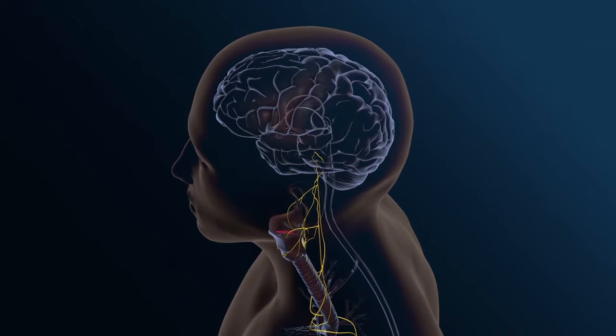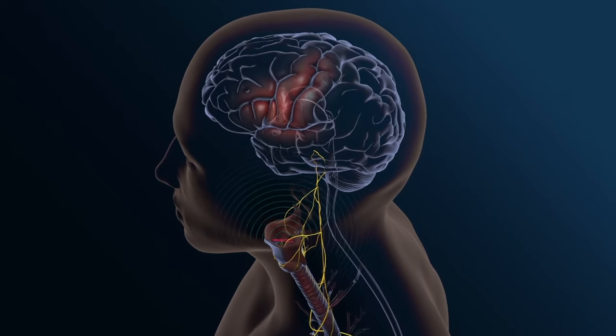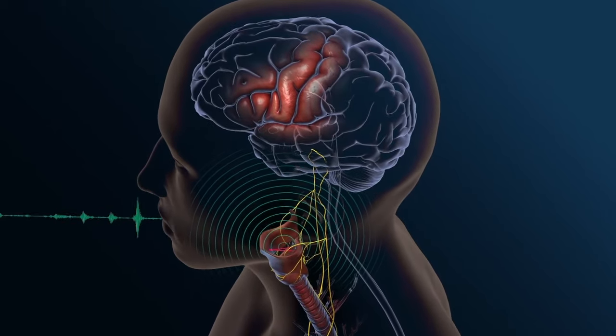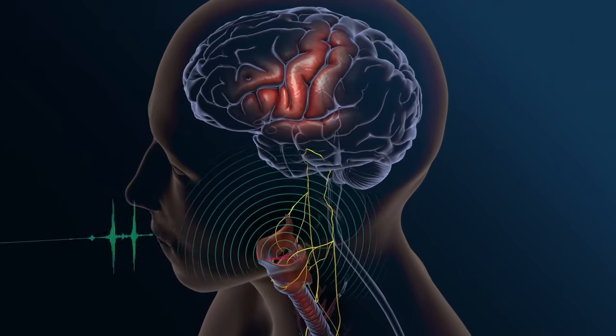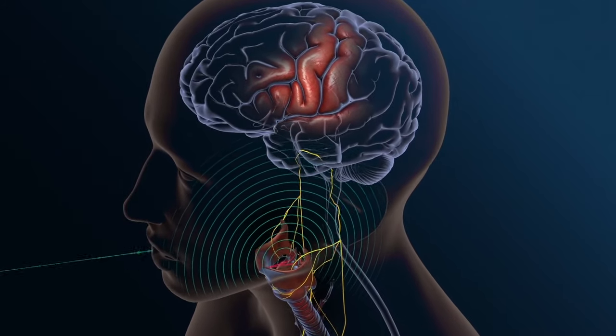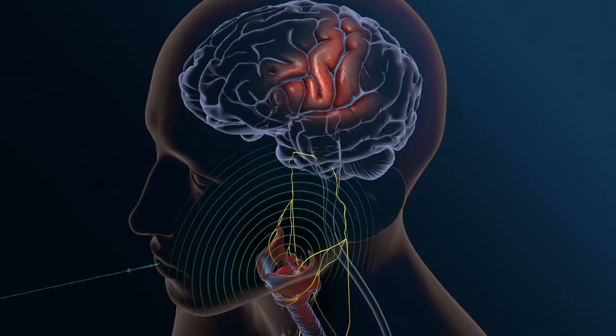Speech is complex. Brain signals precisely coordinate nearly 100 muscles to move the lips, jaw, tongue, and larynx, shaping our breath into sounds that form our words and sentences.